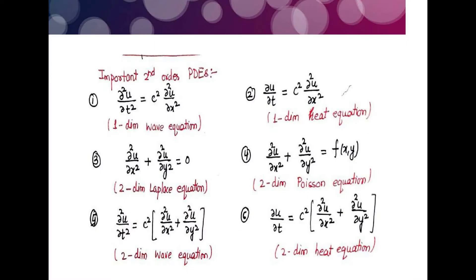Some important second-order PDEs are: first, the one-dimensional wave equation — the second-order derivative of u with respect to t equals c² times ∂²u/∂x²; second, the heat equation — the first-order derivative of u with respect to t equals c² times ∂²u/∂x²; third, Laplace's equation; fourth, Poisson's equation; and fifth and sixth, the two-dimensional wave and heat equations.